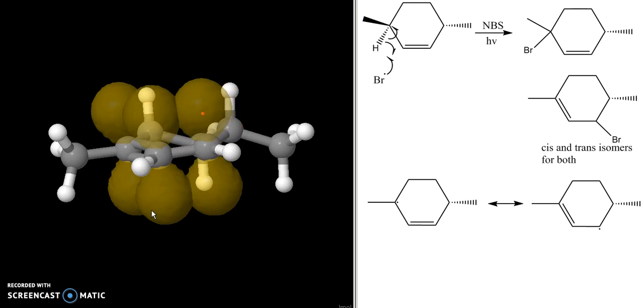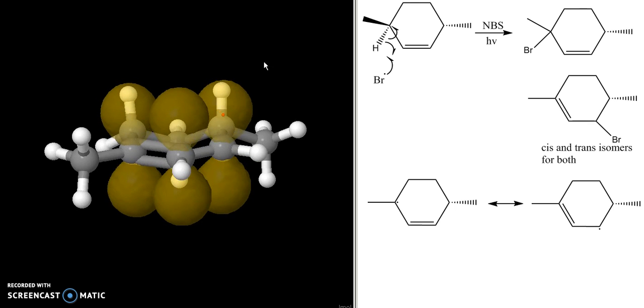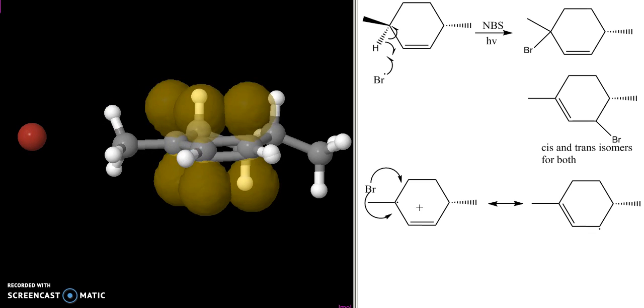So if we focus on this radical first, the Br can go to the top or the bottom, so this Br can come in and interact with this top lobe up here or the bottom lobe down here.